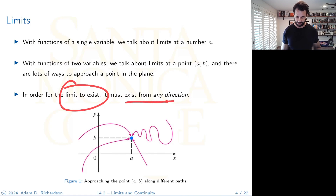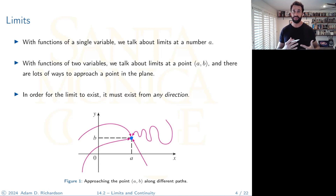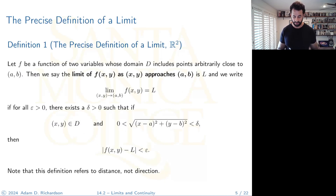For multivariable functions, in order for the limit to exist it must exist from any direction. Your investigation needs to account for an approach from any direction. You might be able to show the limit exists along infinitely many directions, but that does not mean the limit exists — you have not shown it's true for all directions.